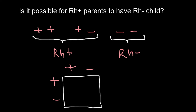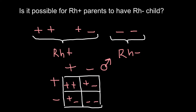When we build a Punnett square we can predict all possible outcomes of such a cross. Both parents, as you see, are Rh positive. The possible genotypes for the progeny are: Rh positive genotype and phenotype, Rh positive genotype and phenotype, Rh positive phenotype — and one child who did not get the allele from either the father's side or the mother's side.